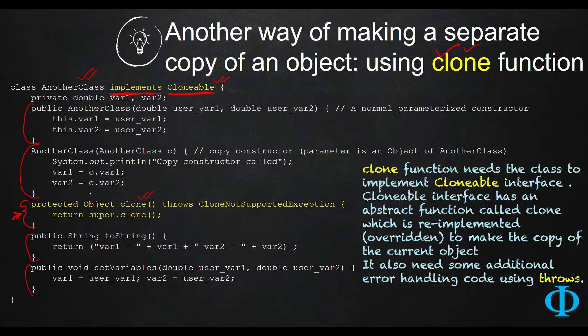In order to do that, you have to use 'protected Object' then clone function name. It does not have any parameters and then 'throws CloneNotSupportedException'. Why Object? Because as you can understand, clone is basically making a different copy of the object.